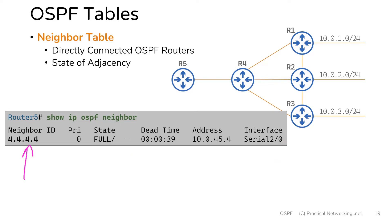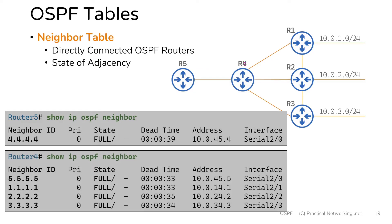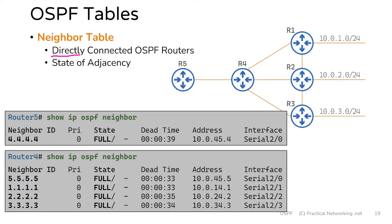Router 5 is telling you it is currently neighbors with a router with the neighbor ID of 4.4.4.4 — that's router 4 in our topology. Notice router 5 says it is in the full adjacency state with router 4, which tells us that router 4 and router 5 see each other as full neighbors. Router 4 also sees router 5 as a full neighbor, but router 4 also has a neighborship with routers 1, 2, and 3. The neighbor table only includes directly connected OSPF routers.